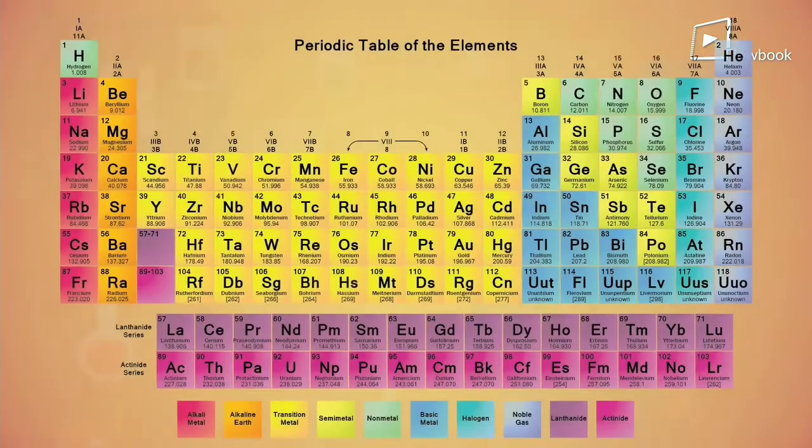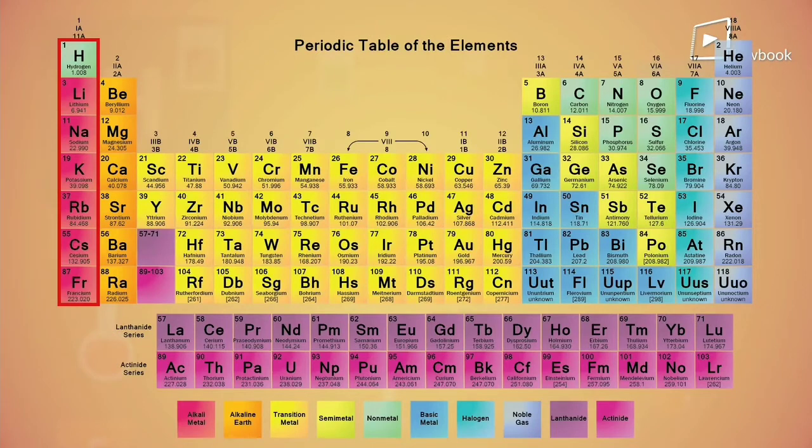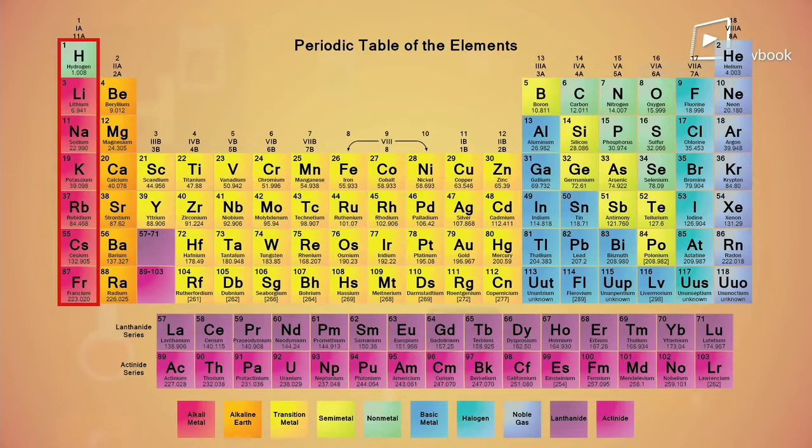If you take a look at the group one elements, all of them have one electron in the valence shell. So it should be easier for us to remove this one electron when compared to a very stable element, say the noble gases.